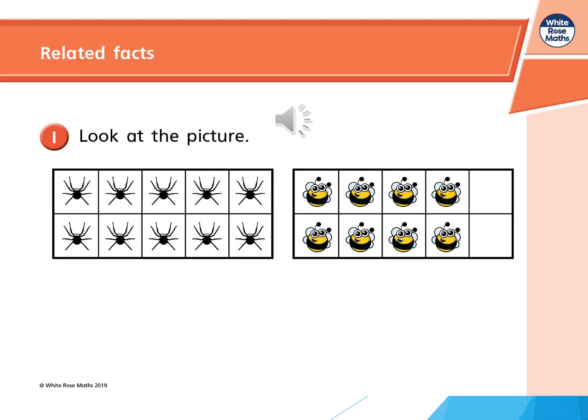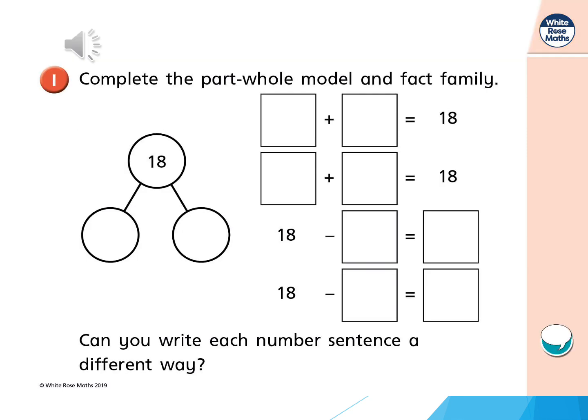So have a look at the picture here. What do I have all together? How many spiders do I have? And how many bumblebees do I have? Using the information of the spiders and the bumblebees, can you complete this part-whole model and complete the fact family questions?